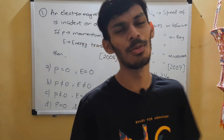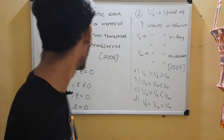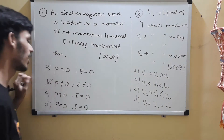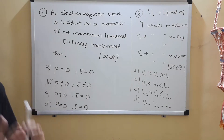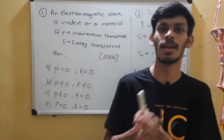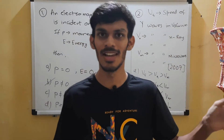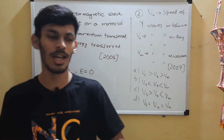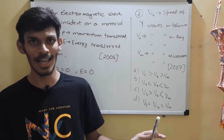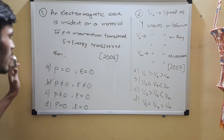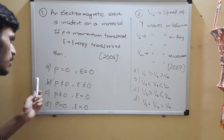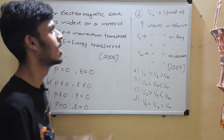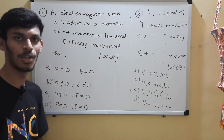Most of the questions today are going to be fact-based. The correct answer is option B. The momentum as well as the energy transferred will be non-zero. An electromagnetic wave is capable of transferring both energy as well as momentum. You might know the formula that energy density is half epsilon naught E naught squared, and momentum is energy density divided by C. So both the momentum transferred and the energy transferred will be non-zero — some finite value. This was a question from 2008.